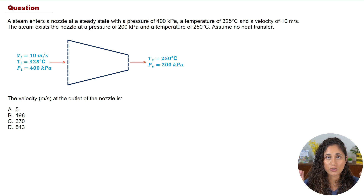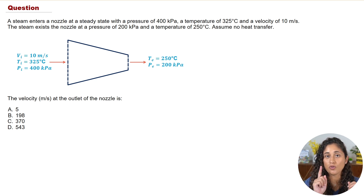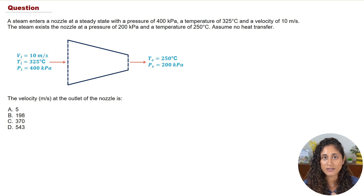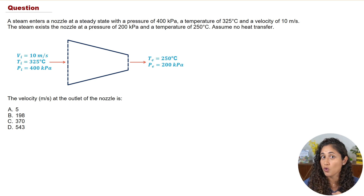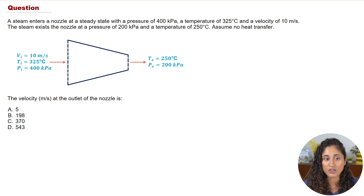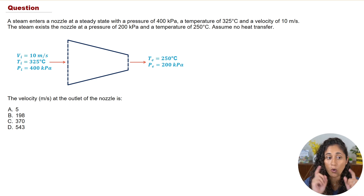The first thing you need to do is go to the reference manual and find the equation. You already have the equation under the thermodynamics section for a nozzle. We are assuming no heat transfer, no work is being done, no change in potential energy, and we have steady state.